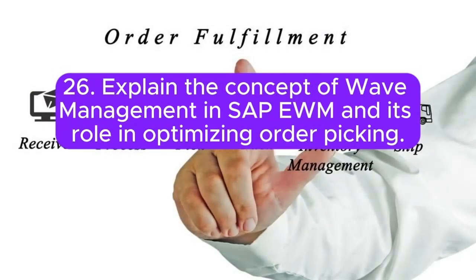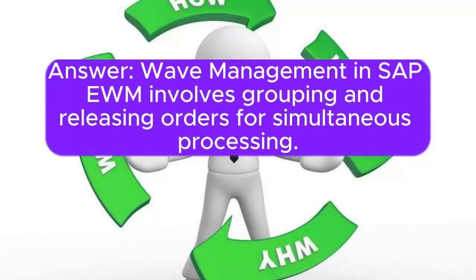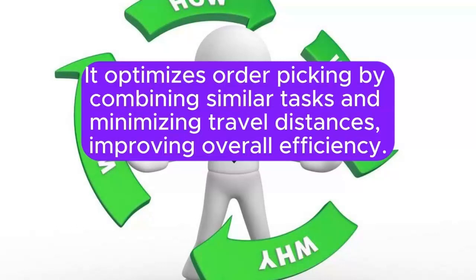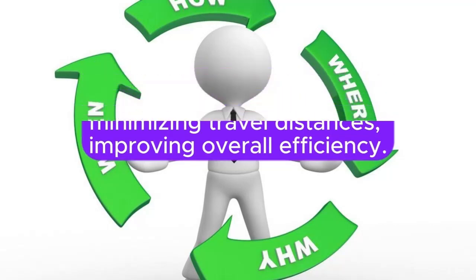Question 26: Explain the concept of wave management in SAP EWM and its role in optimizing order picking. Wave management in SAP EWM involves grouping and releasing orders for simultaneous processing. It optimizes order picking by combining similar tasks and minimizing travel distances, improving overall efficiency.